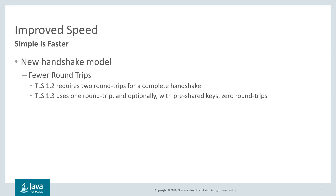TLS 1.3 is also faster than previous versions of the TLS protocol. It has a completely new handshake module which requires fewer roundtrips. TLS 1.2 requires two roundtrips for a complete handshake. However, TLS 1.3 uses one roundtrip by default, and optionally with pre-shared keys, zero roundtrips.